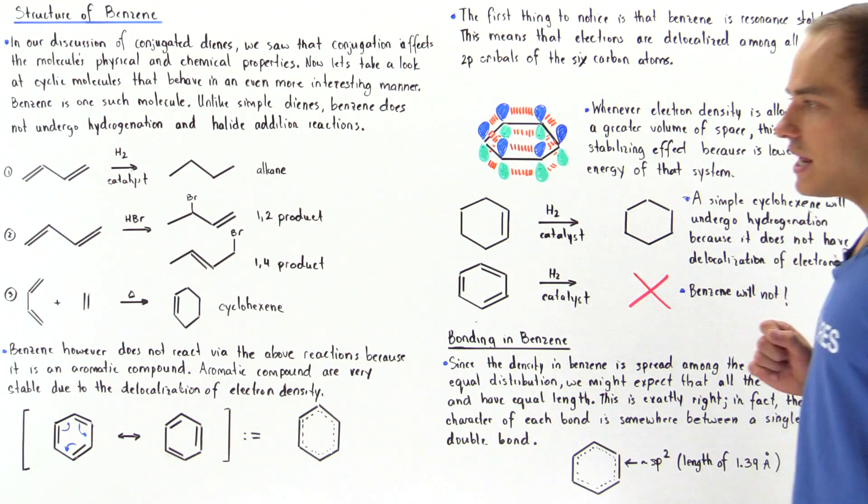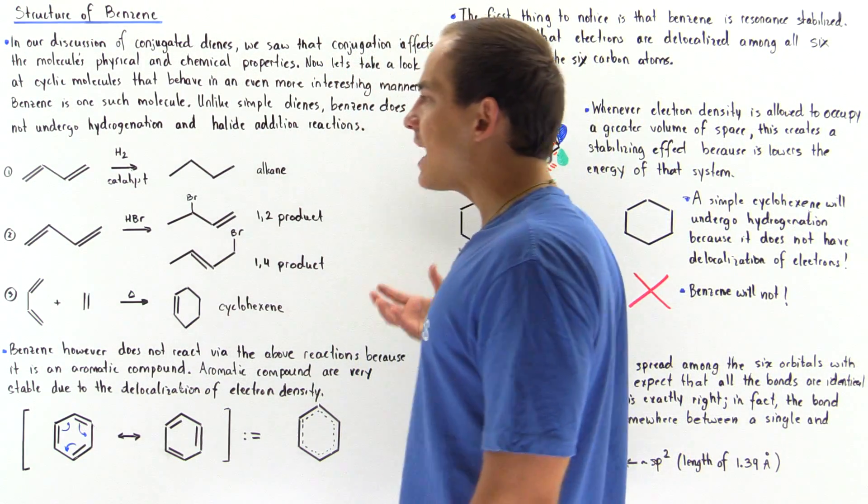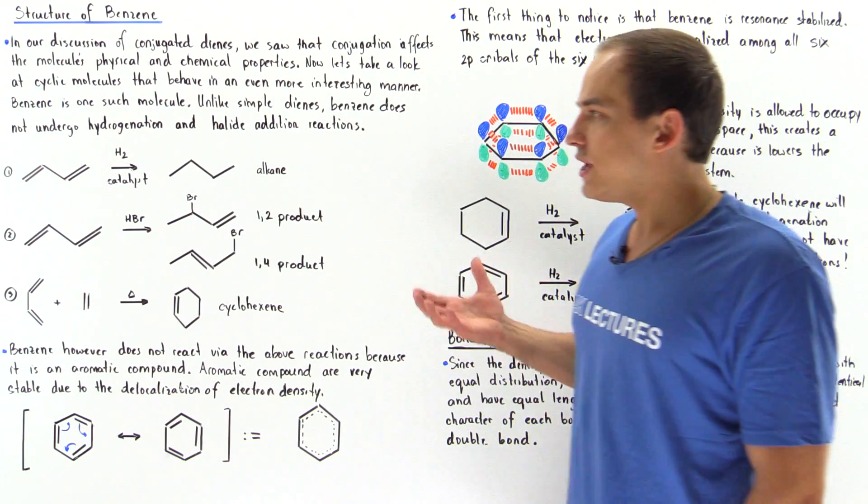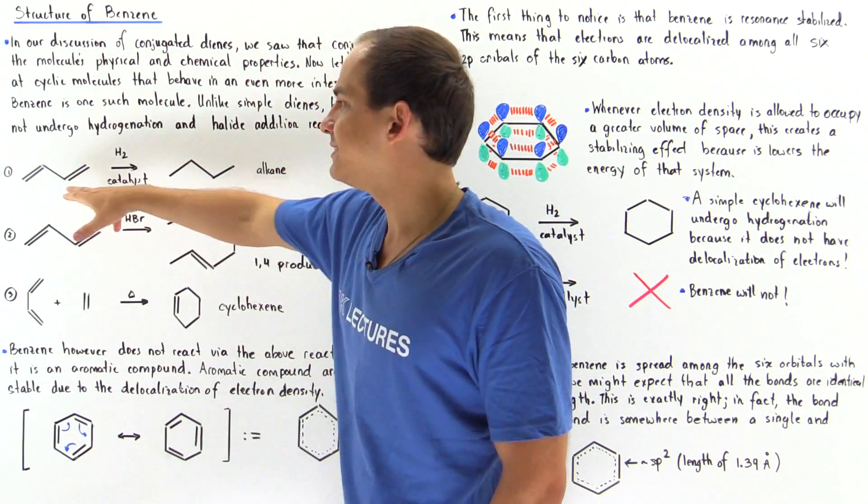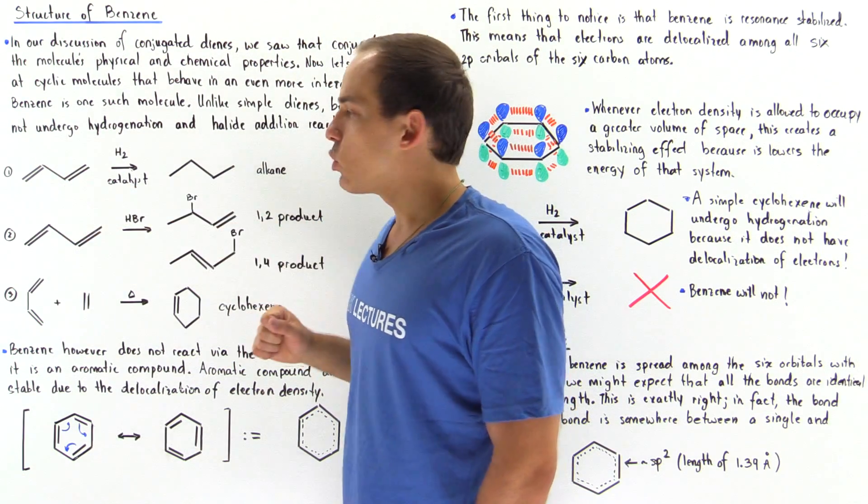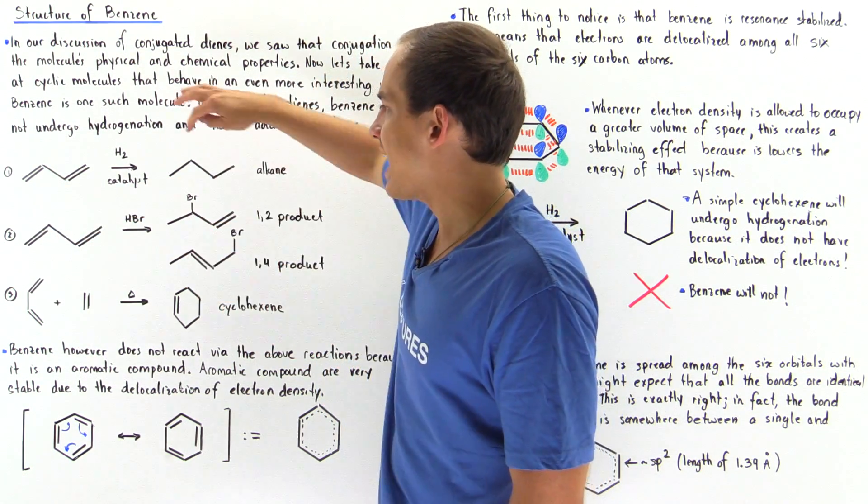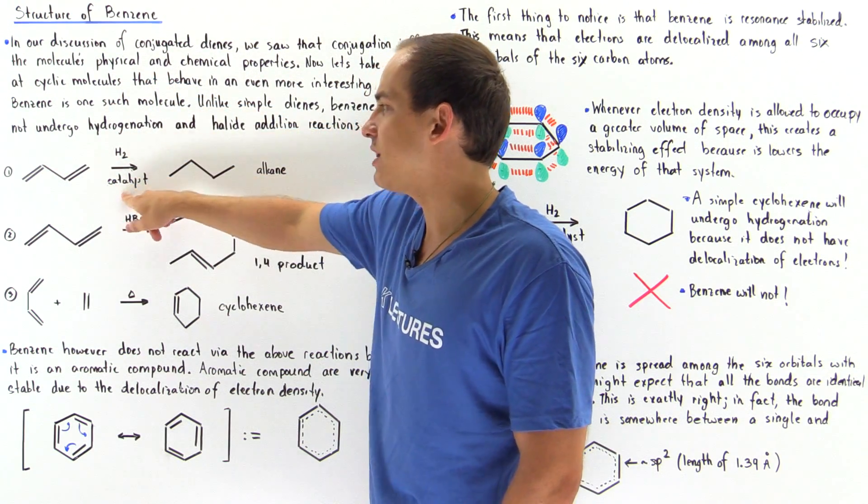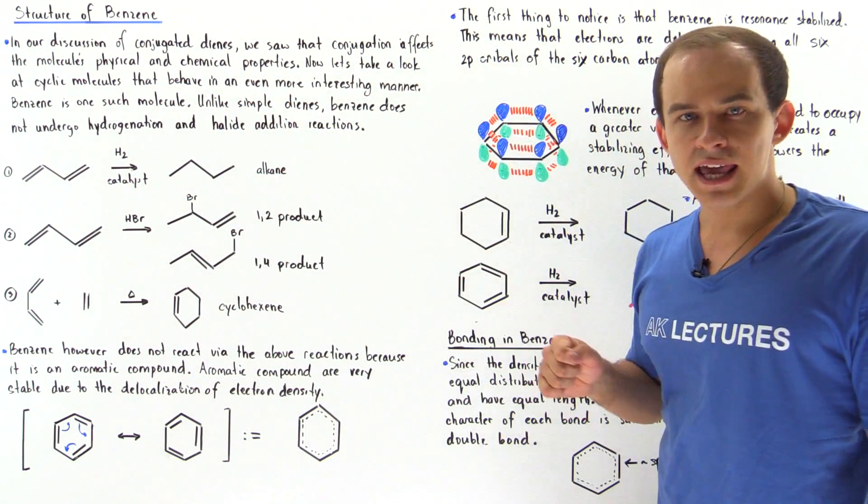So let's begin by taking a look at the following three reactions that we spoke about already. So we examined the hydrogenation of our dialkene. So basically our 1,3-butadiene, if it is reacted with H2 as well as a catalyst, we produce the following alkane.